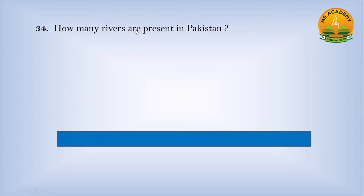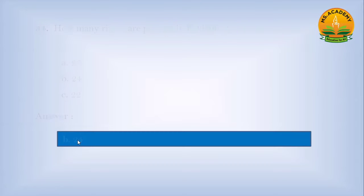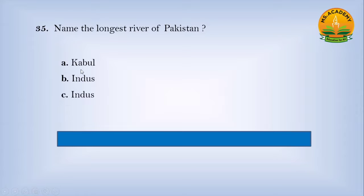How many rivers are present in Pakistan? Option A twenty-three, option B twenty-four, option C twenty-two — answer is B, twenty-four. Name the longest river of Pakistan: option A Kabul, option B Indus, option C Indus — answer is C, Indus.